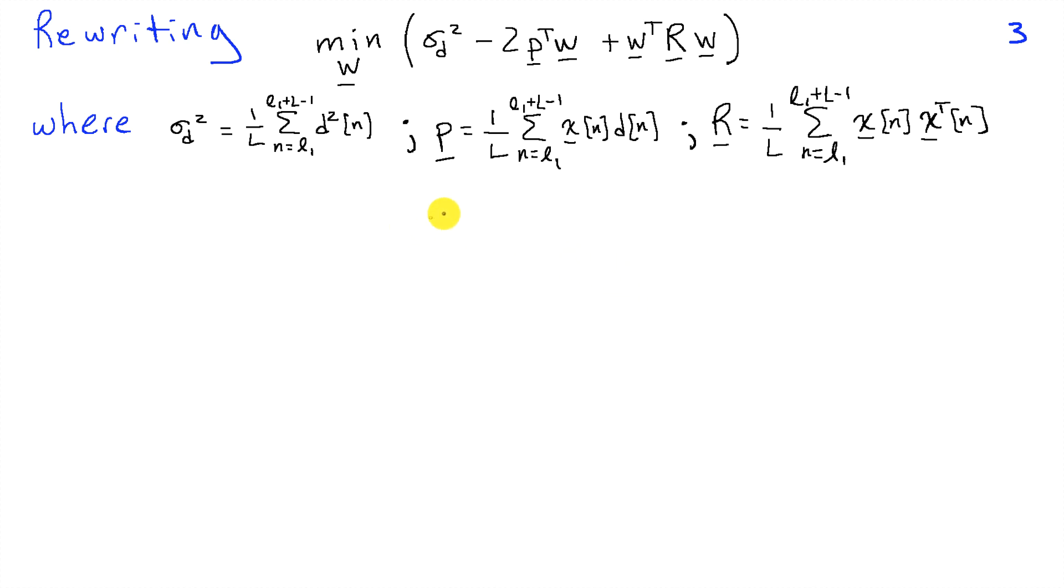So to rewrite that, my problem of minimizing the mean squared error is now minimize over W, sigma D squared minus 2, P transpose W, plus W transpose R, W. And what I've done different in the way I'm defining P and R relative to the previous page is that I'm expanding out the inner products in terms of sums over N.